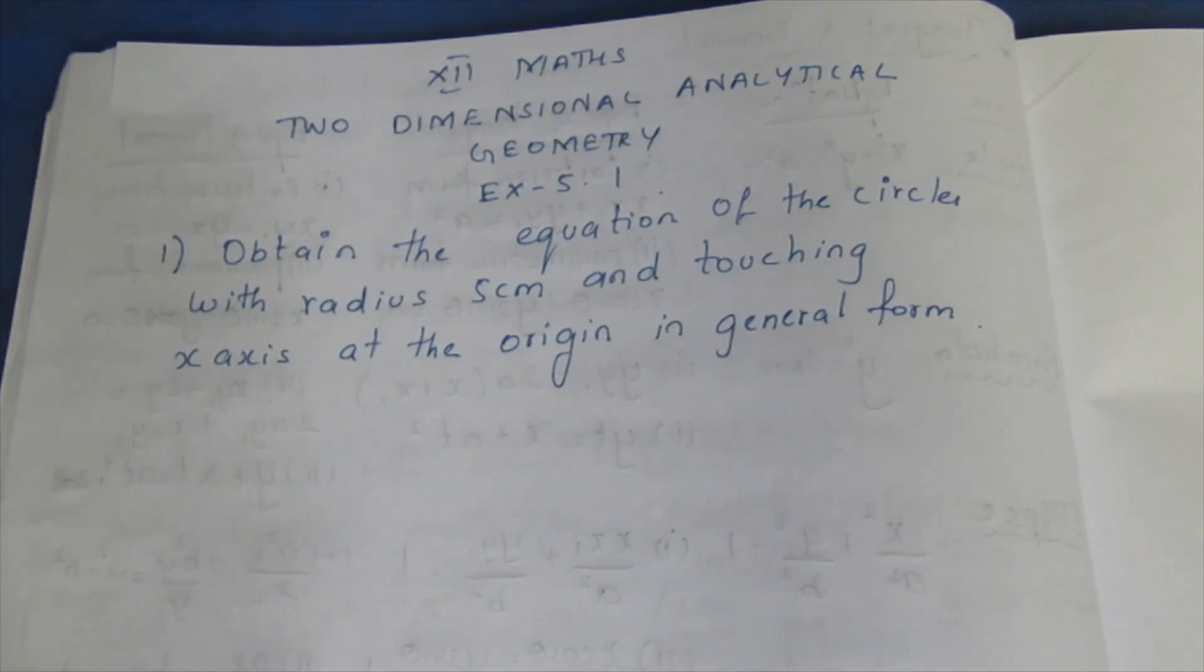Question: Obtain the equation of the circle with radius 5 cm and touching x-axis at the origin in general form.